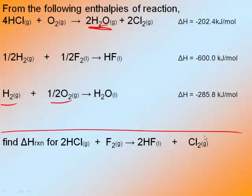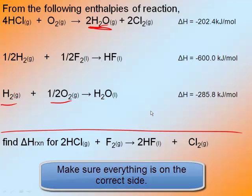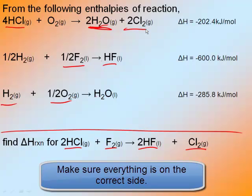I'm going to list off a couple of steps. The first thing you need to do is step one: make sure everything is on the correct side. HCl is on the left in the overall, and I check — yes, HCl is on the left-hand side up above. F2 is on the left-hand side. HF is on the right. Cl2 is on the right. So my first step is making sure that everything is on the correct side.